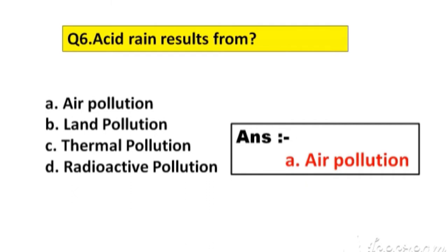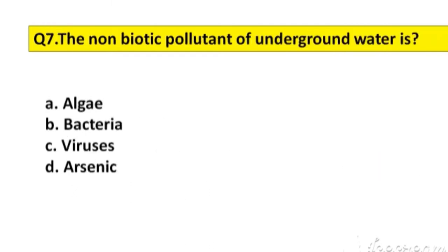Question number 7. The non-biotic pollutant of underground water is. Option A: Algae. B: Bacteria. C: Viruses. D: Arsenic. The right answer is option D, Arsenic.